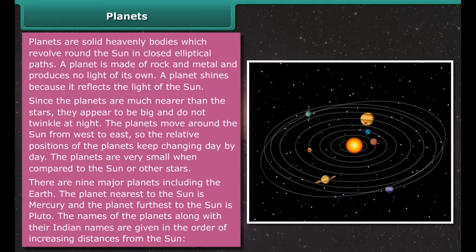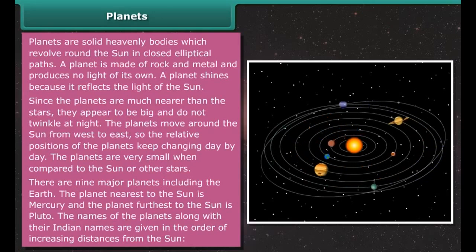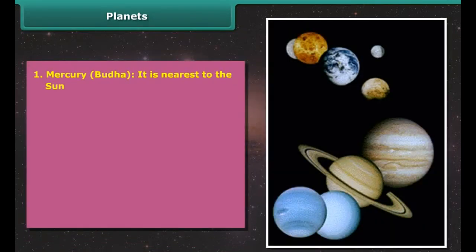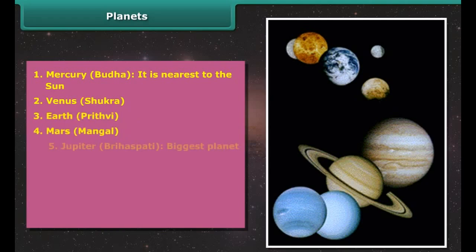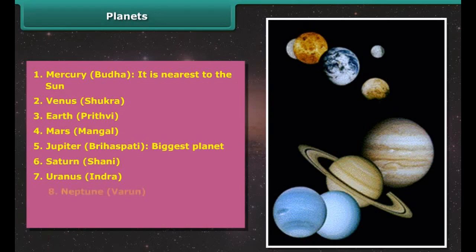A satellite or moon is a solid heavenly body that revolves around a planet. The Moon revolves around the Earth, so the Moon is a natural satellite of Earth. Satellites have no light of their own — they shine because they reflect the light of the Sun. Though we commonly call Earth's natural satellite the Moon, the satellites of all other planets can also be called their moons.